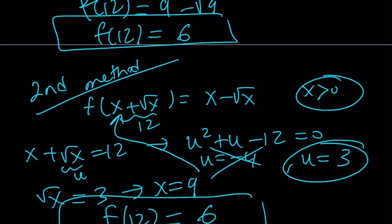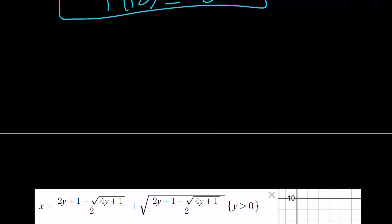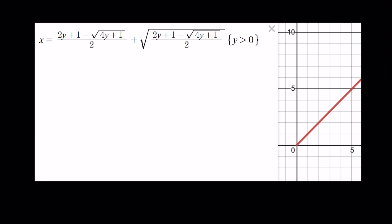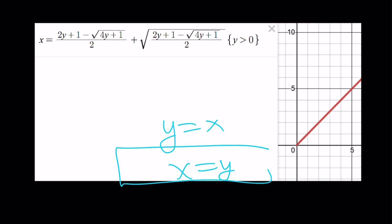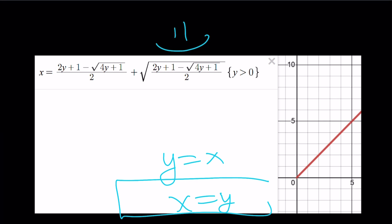The first method is painful but gives an application of the quadratic formula to equations with two variables. Looking at the graph of x = (2y+1−√(4y+1))/2 for positive y values, you get y = x — which verifies our work. Thank you for watching. Please comment, like, and subscribe. I'll see you tomorrow with another video. Until then, be safe, take care, and bye-bye.